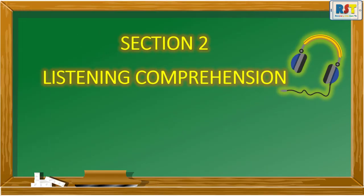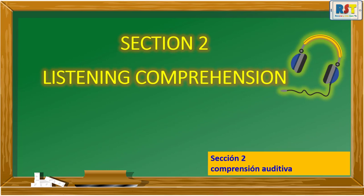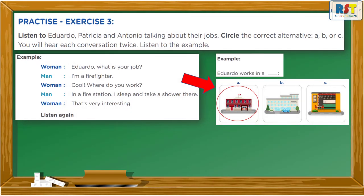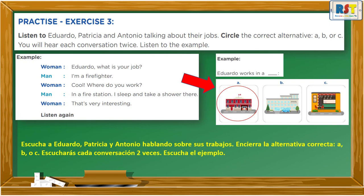Section 2: Listening Comprehension. Practice Exercise 3. Listen to Eduardo, Patricia and Antonio talking about their jobs. Circle the correct alternative A, B, or C. You will hear each conversation twice. Listen to the example.